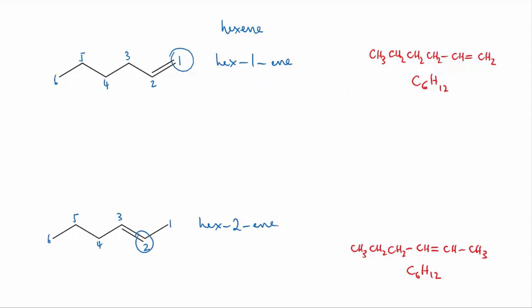For simple alkenes without branches you can also sometimes find these names written as one hexane and two hexane. But as our molecules get more complicated and we start having prefixes on the names it's often clearer to put the number directly in front of the ene to indicate what it refers to.